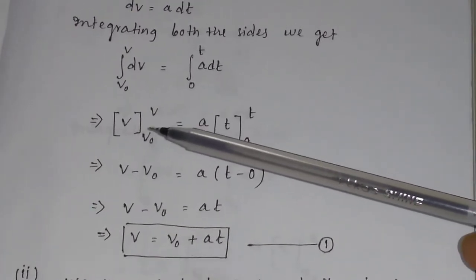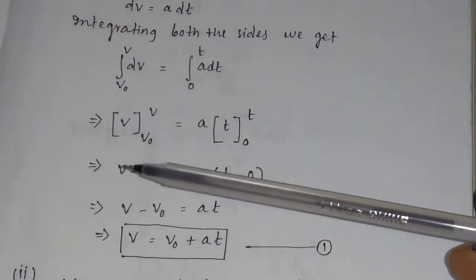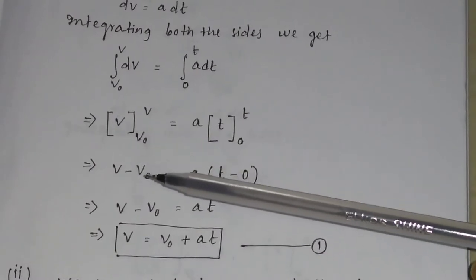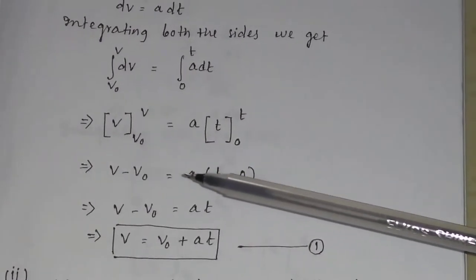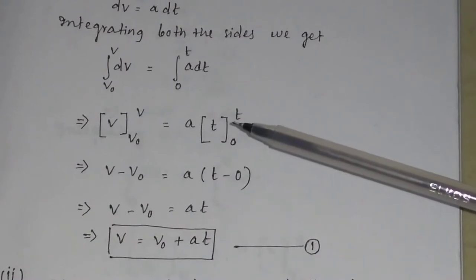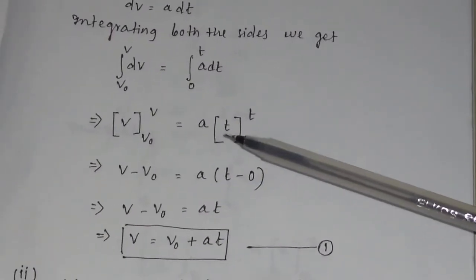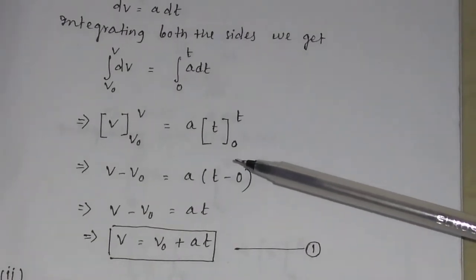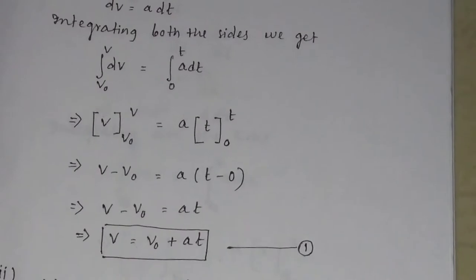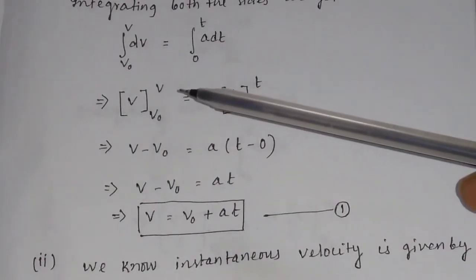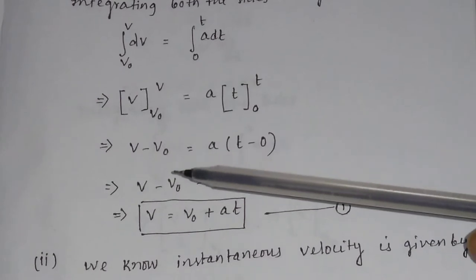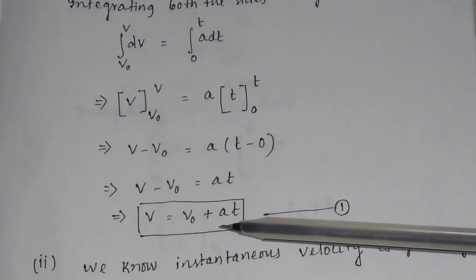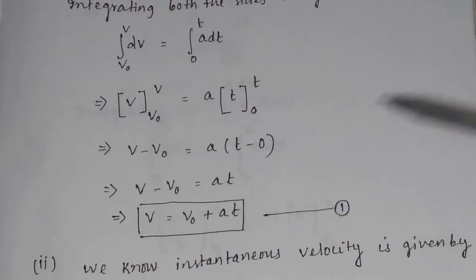When you substitute the upper limit, you get V, and when you substitute V₀ for the lower limit, you get V₀. So V minus V₀ equals A into t. Substituting t gives t, and substituting 0 gives 0. Therefore, V minus V₀ equals At, or V equals V₀ plus At. This is the first equation of motion.